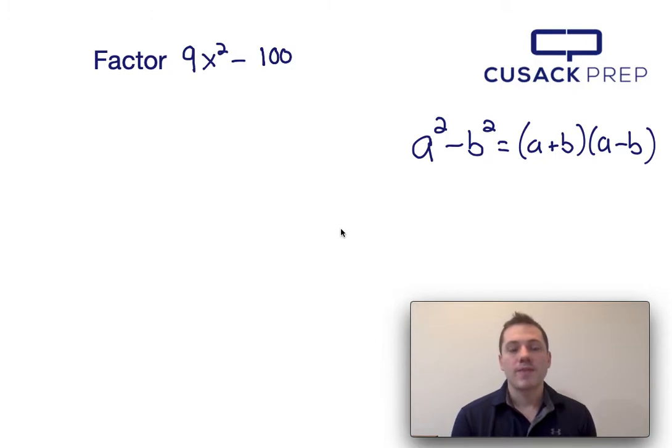Now the first thing I notice is that 9x squared and 100 are both perfect squares. Because 9x squared and 100 are being subtracted from one another, this can be factored using the difference of squares equation, which I presented over here on the right hand side.